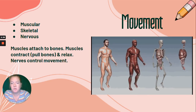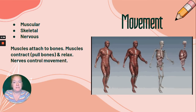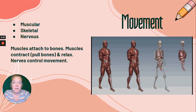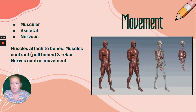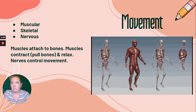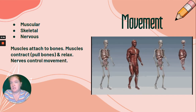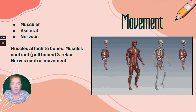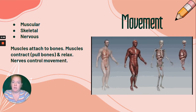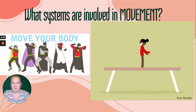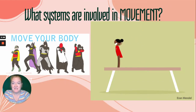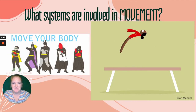Nerves control movement. They send signals and help coordinate things like walking, running, and riding a bike.